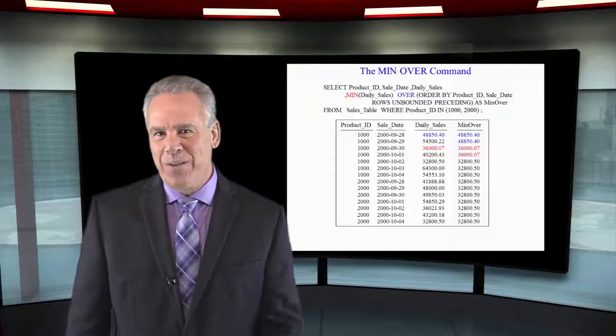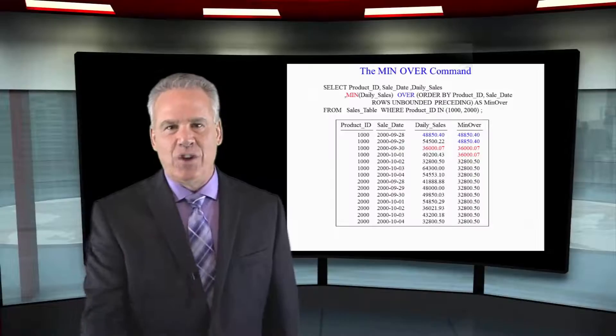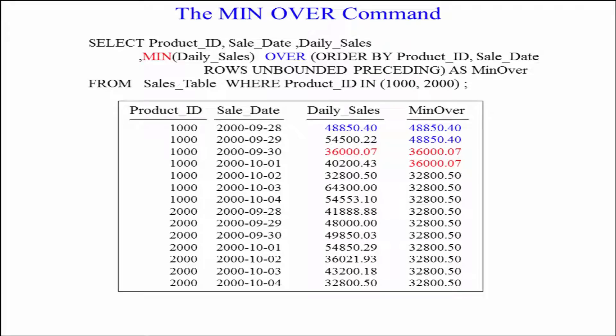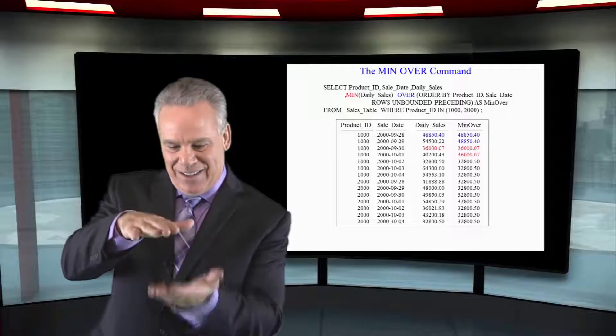This is the MIN OVER — the MIN of daily sales. It's not an aggregate because of the word OVER; it's an ordered analytic. The first thing we do is ORDER BY product ID and sale date, and once all the rows are sorted, they begin the calculation on the min. On day one of daily sales, after the sort, we made 48,850.40 — that's the min to start. Then we made 54,000 — that's above that, so we still keep our min of 48. We eventually get to 36,000, and that's the new min. This gives you the minimum value thus far.